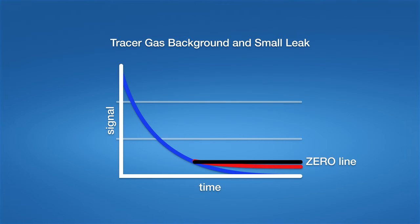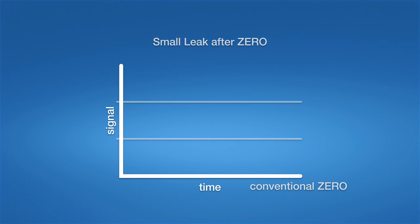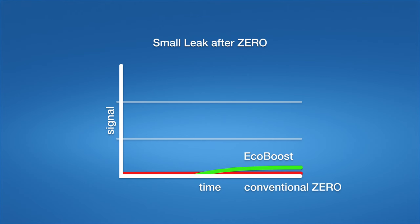Therefore, a conventional zero function will not show any signal if the red curve is not increasing. But we know that our true leak signal is the difference between the blue curve and the red curve. Again, the new EcoBoost is able to predict the blue curve and display the true leak size instead of pretending that there is no leak at all.